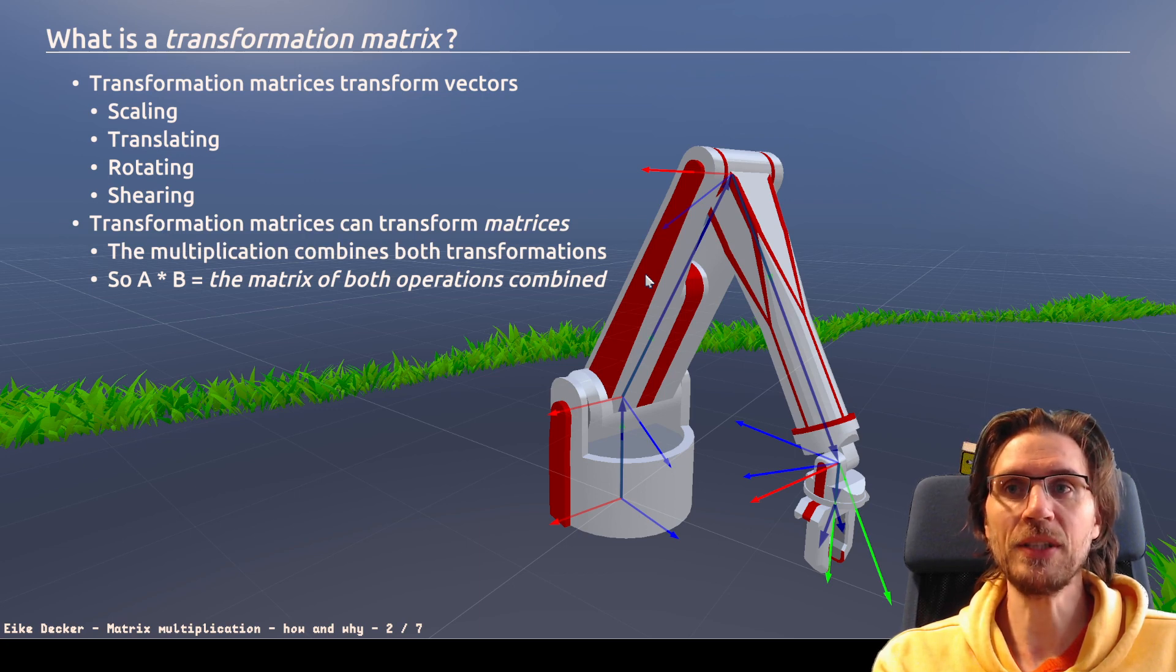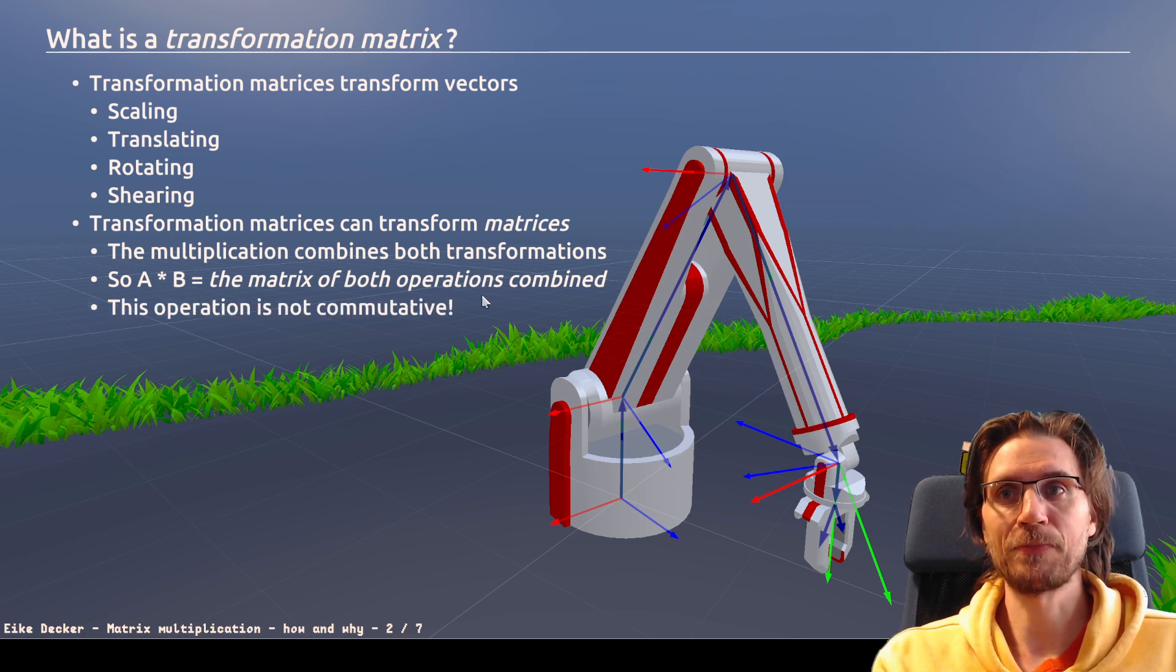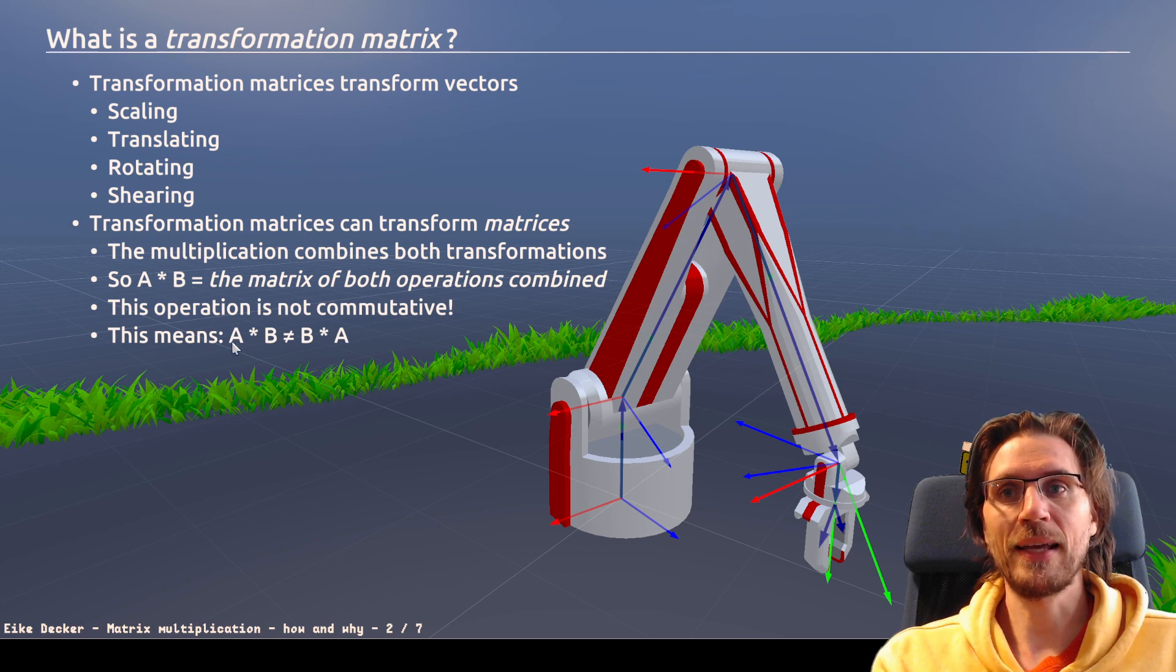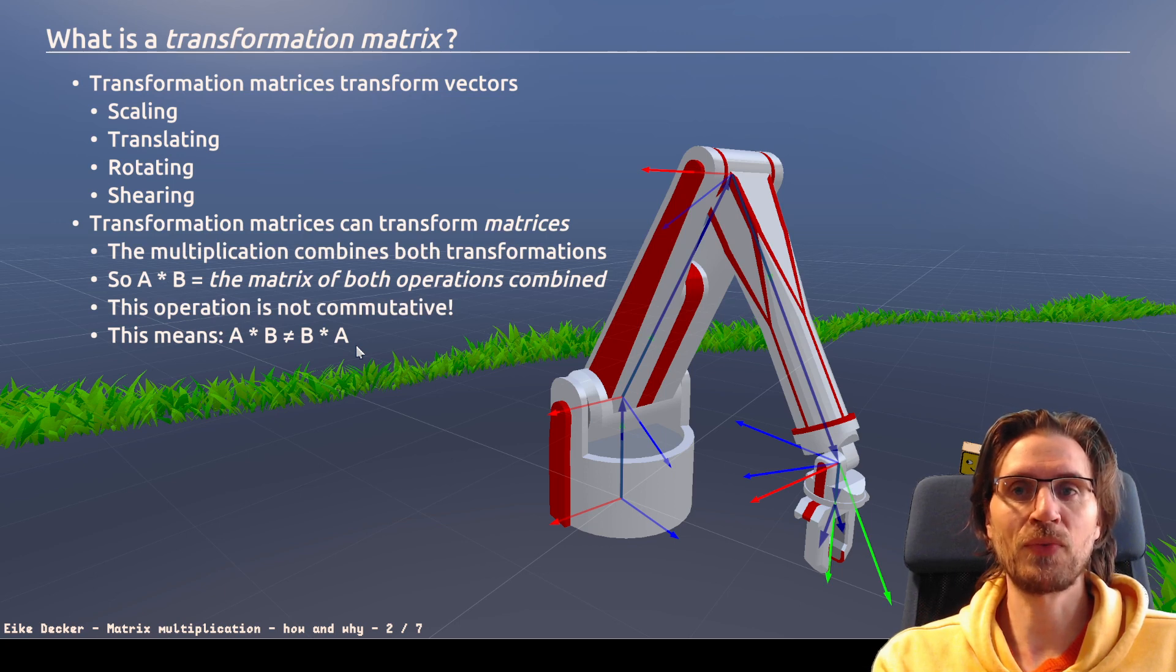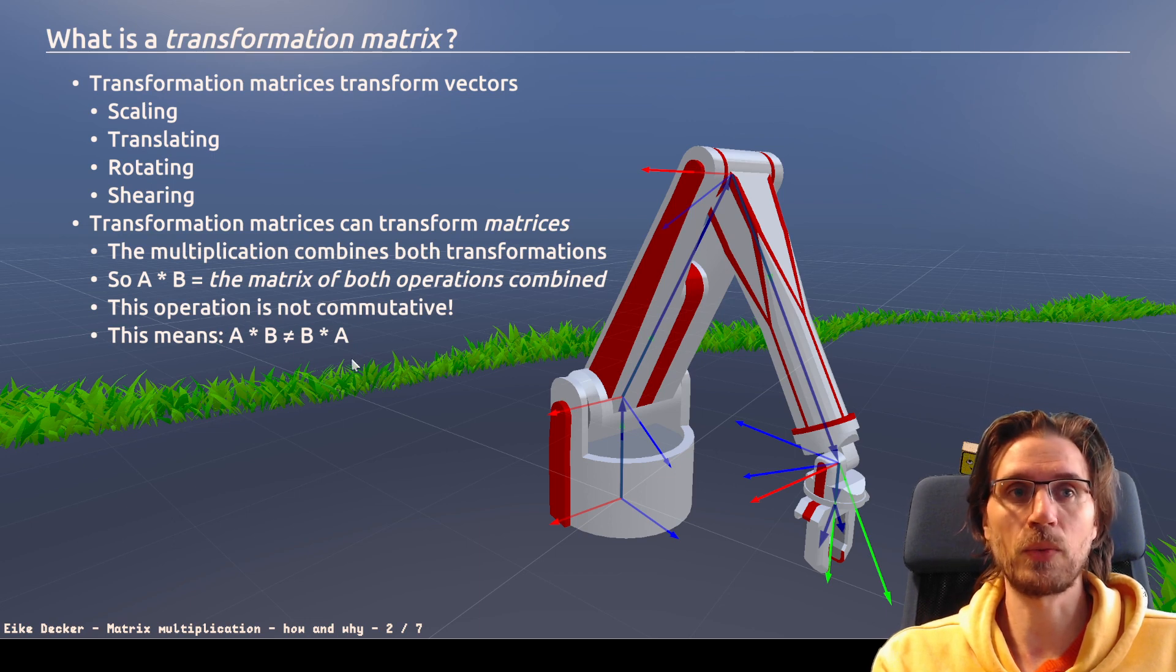So A times B, when both are matrices, result in a matrix that combines these operations. And this operation is not commutative. That means that A times B is not equal to B times A. If you wonder why, well, if you first walk five steps forward and then you turn to the right, you will end up in a different place than when you first turn to the right and then move five steps forward. And this is why this does not work.